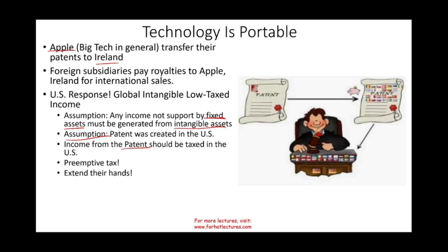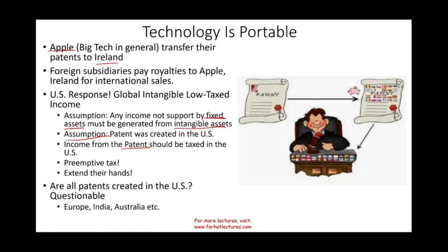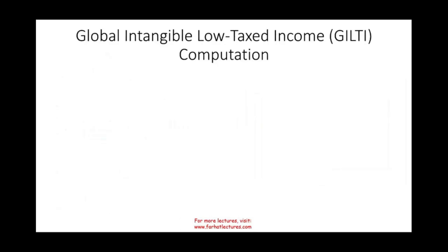The question is, are all patents created in the U.S.? That's questionable, because U.S. companies have offices and research facilities all over the world — in Europe, India, and Australia. But the point is the U.S. government wants to extend their hand to prevent the erosion of the tax base. They want you to pay taxes. As long as you're a U.S. company — although you're operating internationally — they want access. They don't want you to defer anything. That's the whole idea behind GILTI, which is a genius idea in extending reach to even active income overseas.